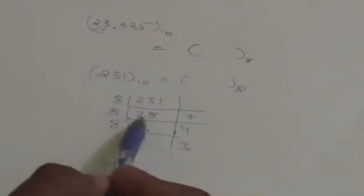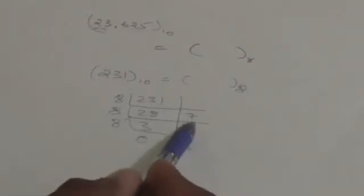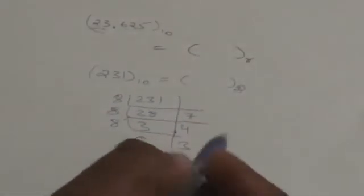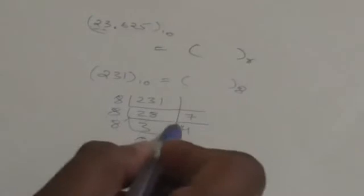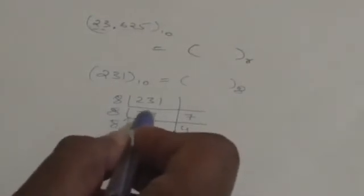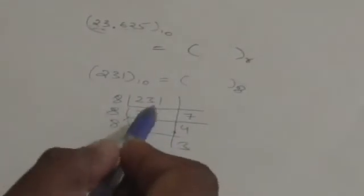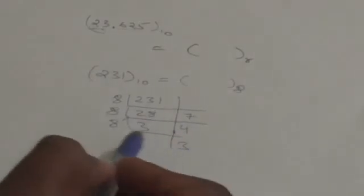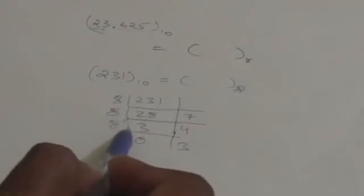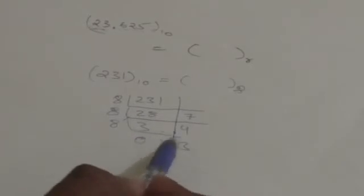The procedure is: first divide the number by the base and whatever quotient we get, divide it successively by the base, and accumulate the remainders. Here the number is 231. When we divide 231 by 8 we get quotient 28 and remainder 7. Then again divide the quotient 28 by 8 — we get quotient 3 and remainder 4. Then again divide by base 8 — quotient will be 0 and remainder will be 3.